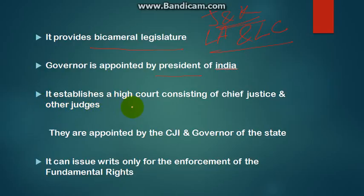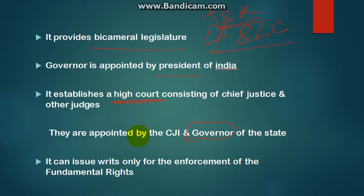It establishes a High Court consisting of a Chief Justice and other judges. There is no Supreme Court at the state level — directly only a High Court exists. States only have High Courts. The judges are appointed by the Chief Justice of India (CJI) and the Governor of the state in consultation with each other. Through this process, the appointment of the Chief Justice and judges of the High Court is made.